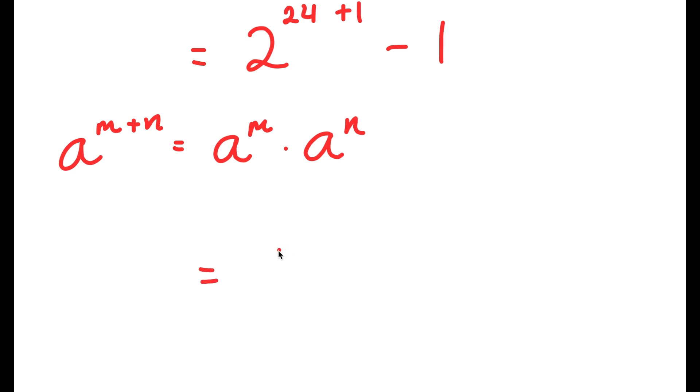So 2 to the power of 24 plus 1 is going to equal 2 to the power of 24 times 2 to the power of 1 minus 1.